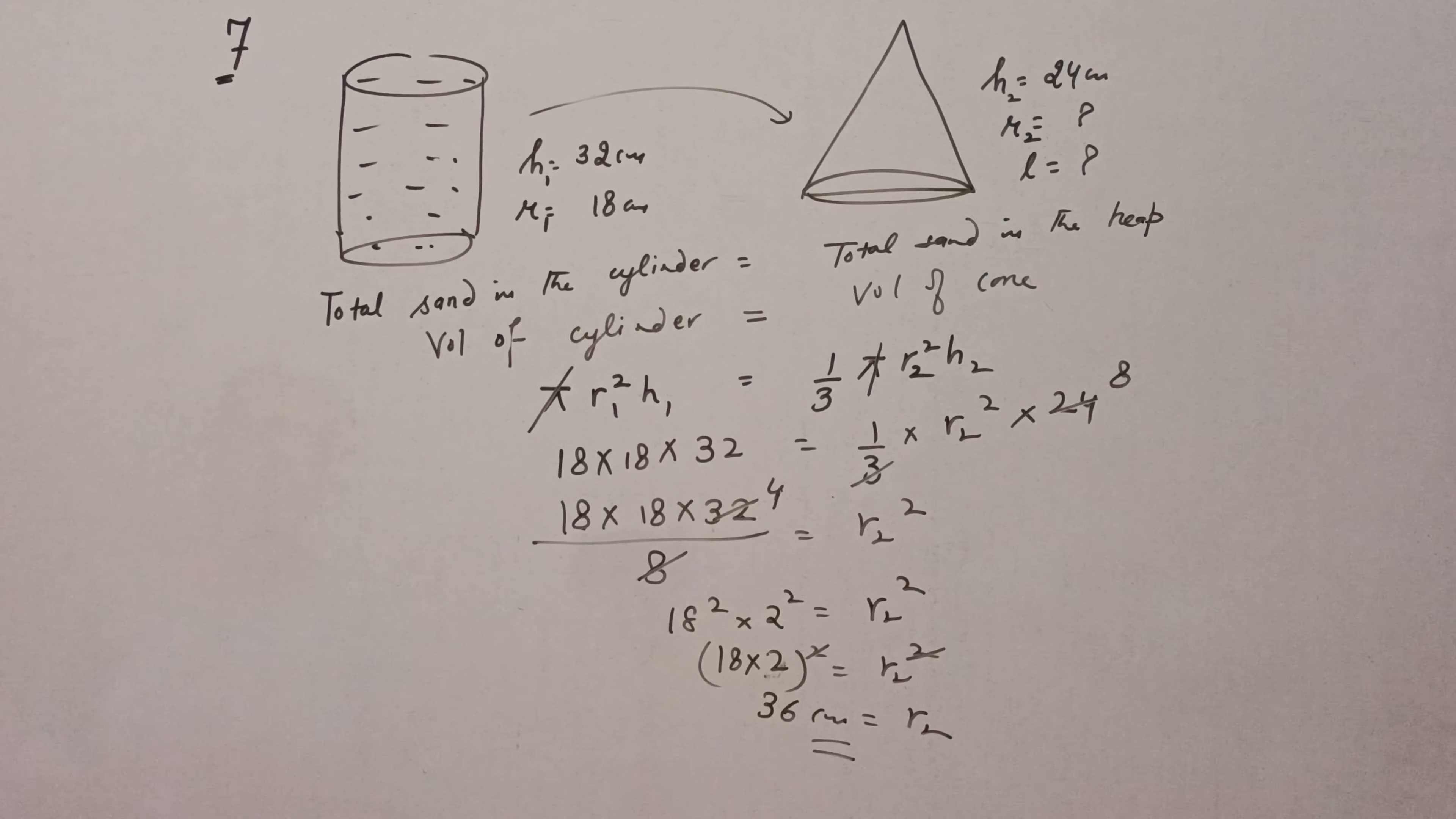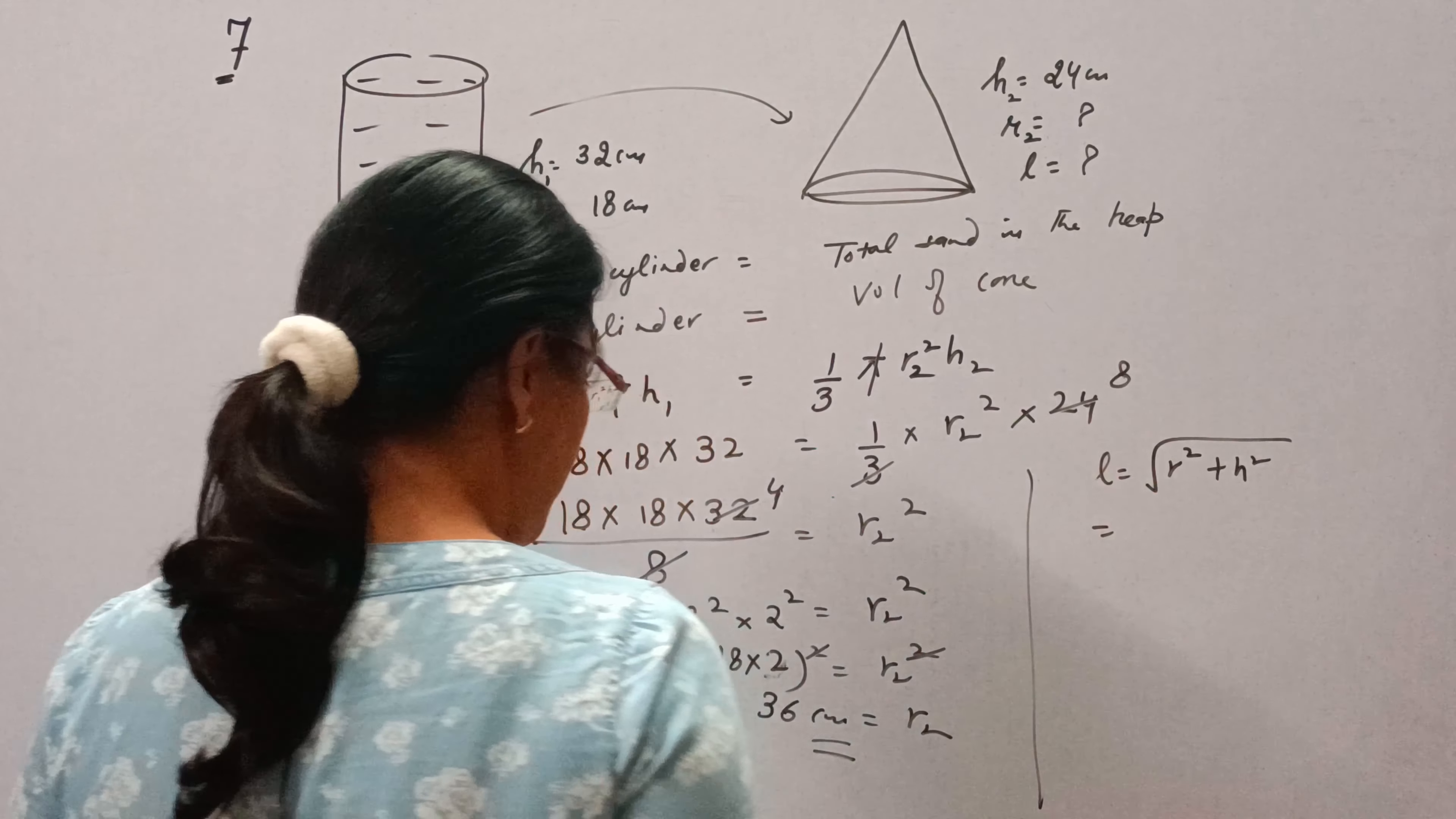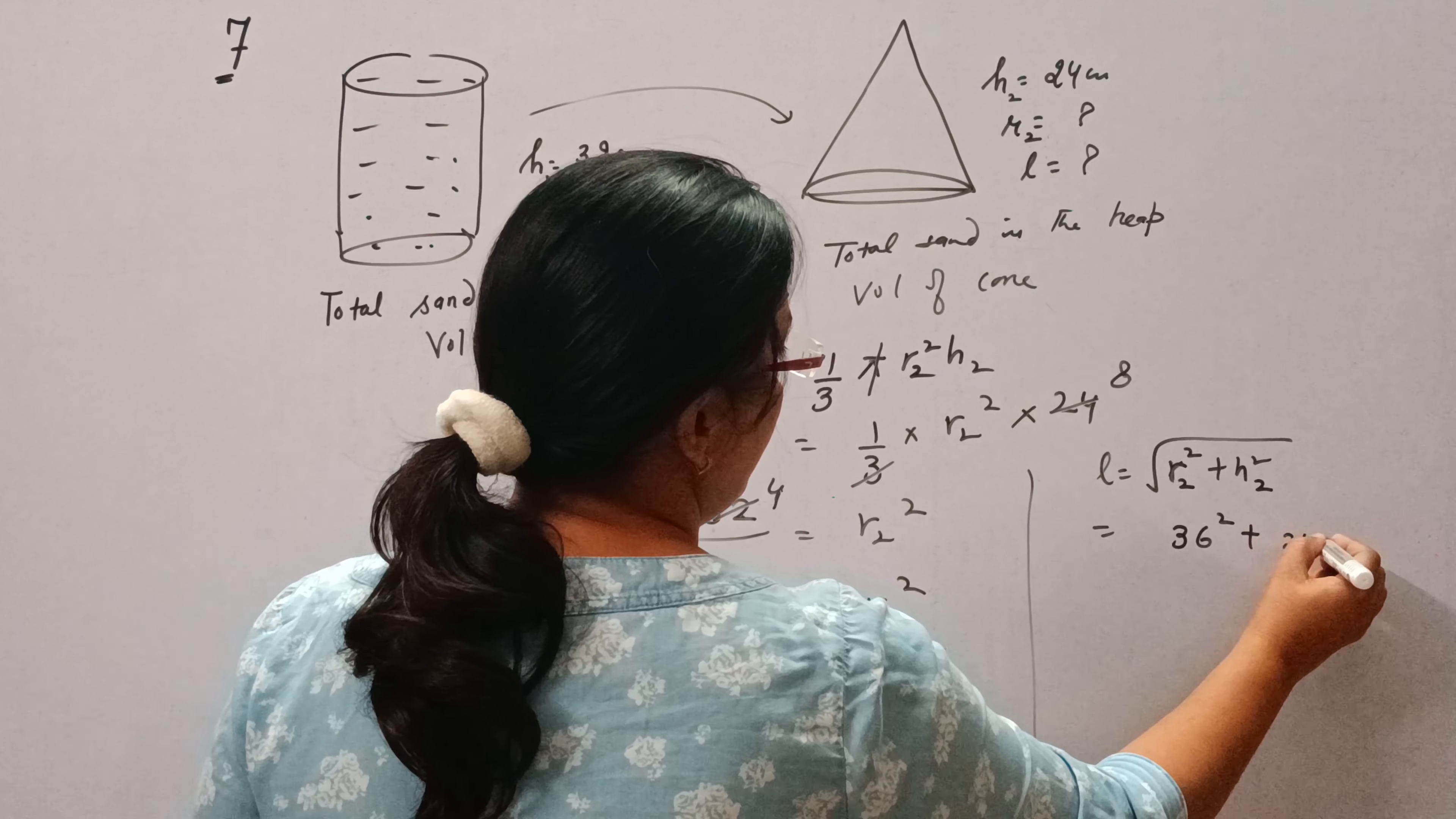Now we need to find the slant height. L is equal to square root of R square plus H square. So this is R2 and this is H2. R2 is 36, H2 is 24.